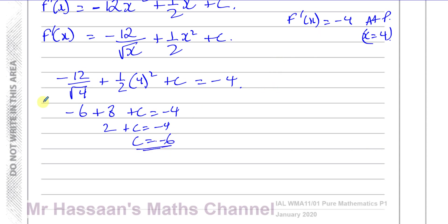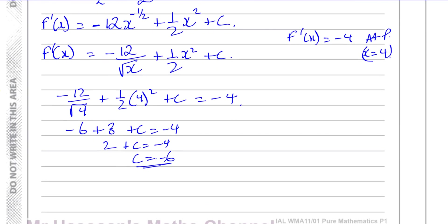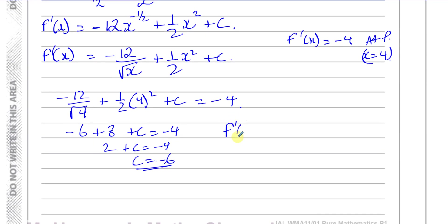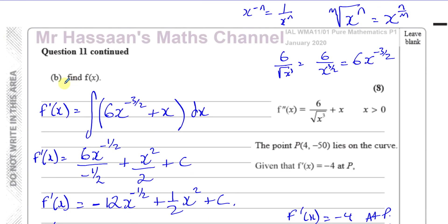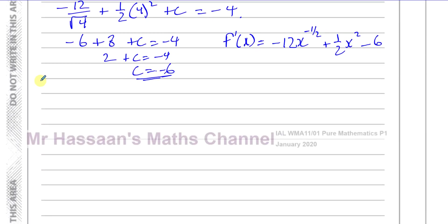So now f dash of x equals −12x^(−1/2) plus (1/2)x² minus 6. That's the first differential, but we're asked to find the original function f of x, so we integrate this one more time.